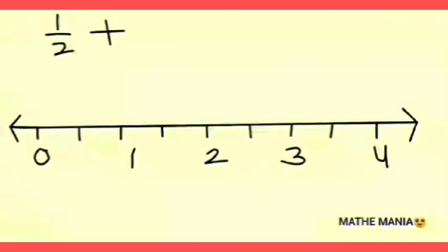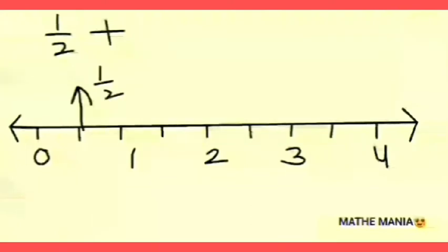Next, to find the position of 1/2 on this number line, we use the numerator. We used the denominator to count the integer intervals; now we use the numerator to count. Remember that counting will always start from the next point after 0.